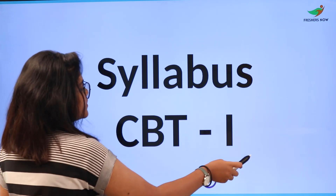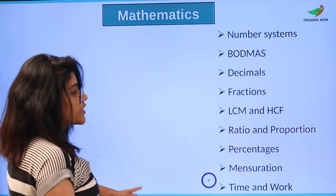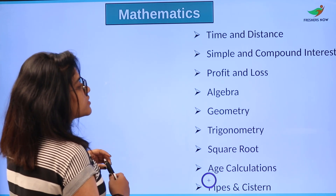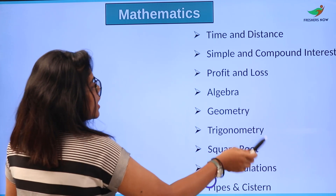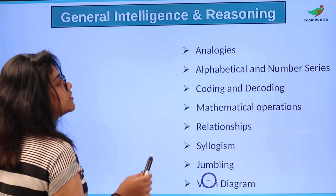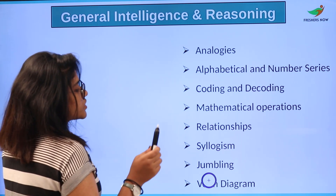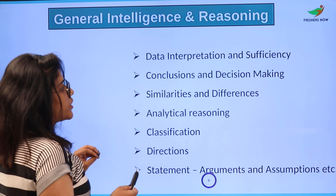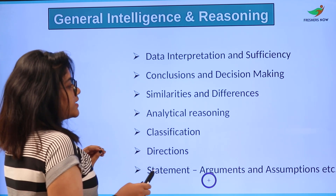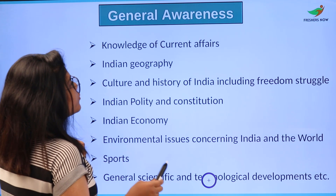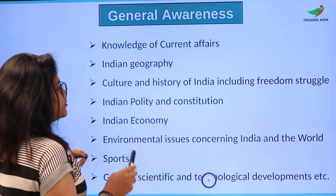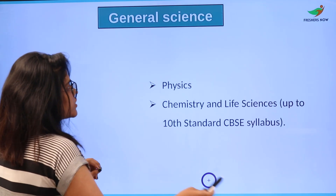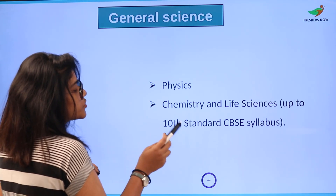Now let us see what the syllabus is for CBT 1. For Mathematics: number system, decimals, fractions, LCM, HCF, percentages, simple and compound interest, profit and loss, algebra, geometry, trigonometry, square root, and other topics shown on screen. For General Intelligence and Reasoning: analogies, coding and decoding, relationships, jumbling, Venn diagrams, data interpretation and sufficiency, conclusions and decision making, similarities and differences, analytical reasoning, and more. For General Awareness: current affairs, Indian geography, culture and history of India including the freedom struggle, Indian polity, Indian economy, sports, and environmental issues. For General Science: Physics, Chemistry, and Life Sciences up to 10th standard, covering the CBSE syllabus.